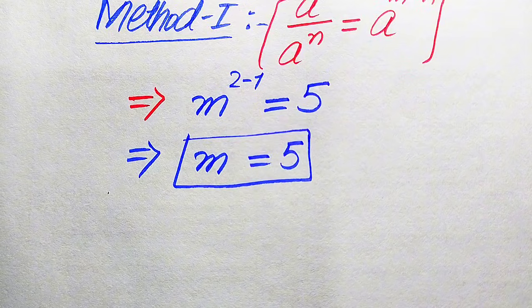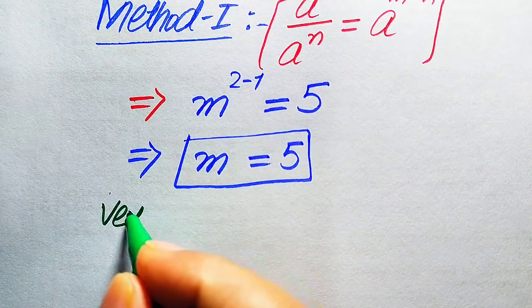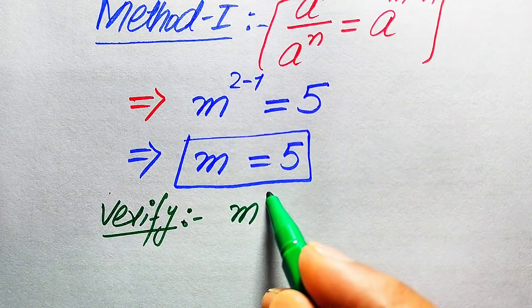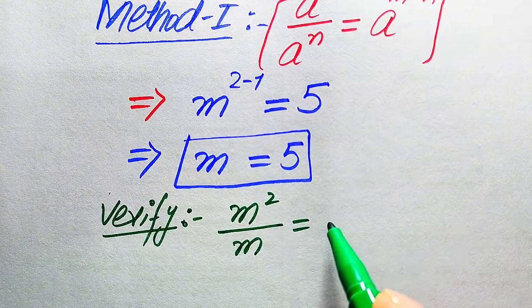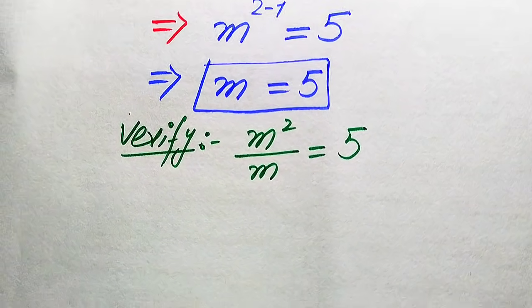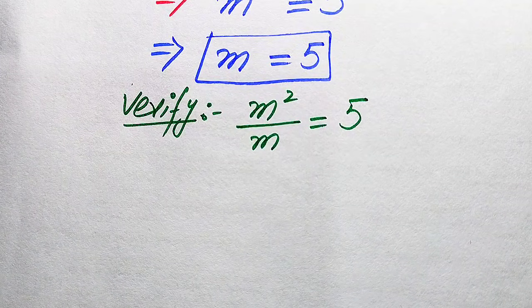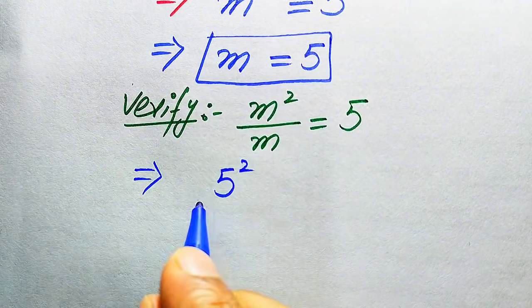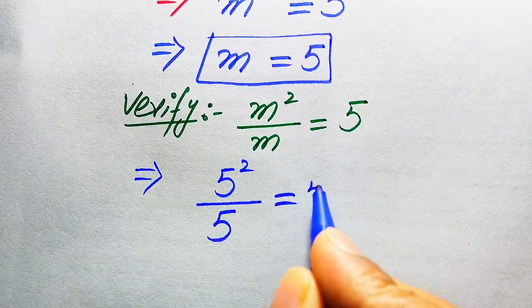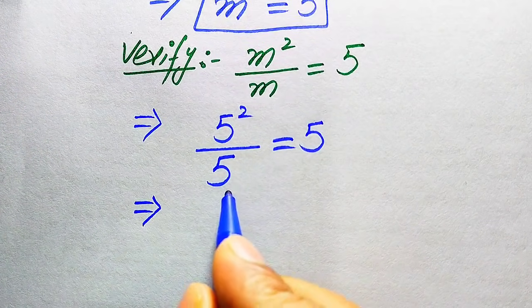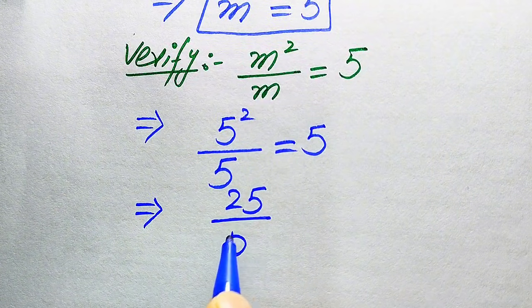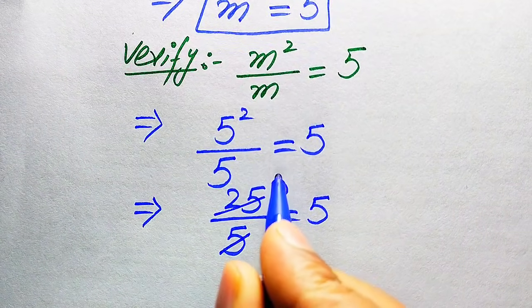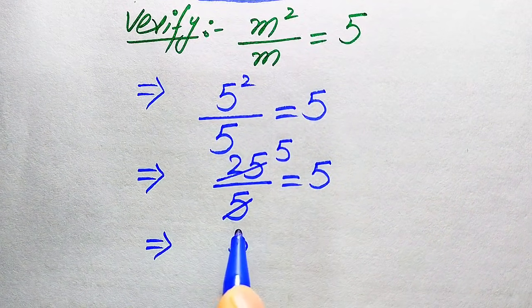Now we verify whether m equals 5 is a solution or an extraneous root. Substituting into the original equation: m squared divided by m equals 5 becomes 5 squared divided by 5, which is 25 divided by 5. Cancelling, we get 5 equals 5.